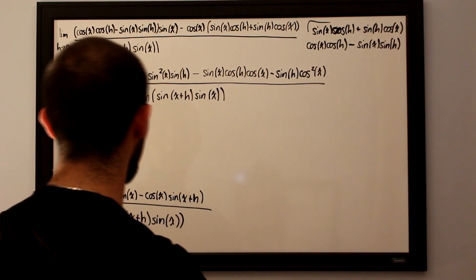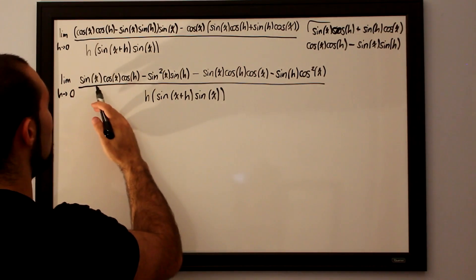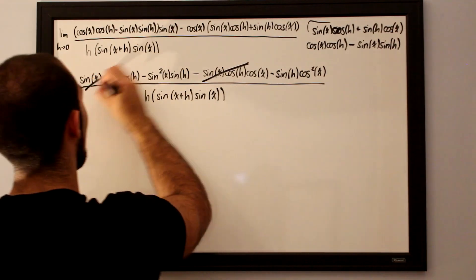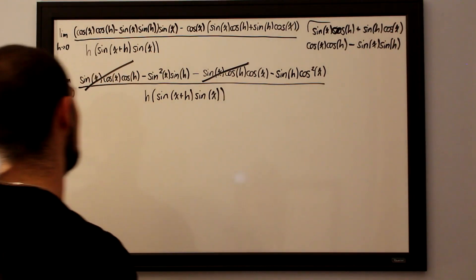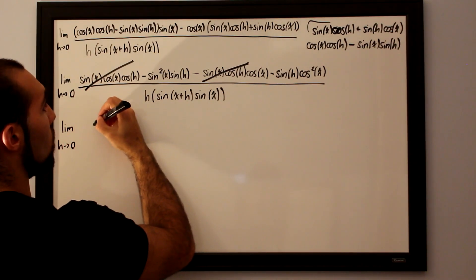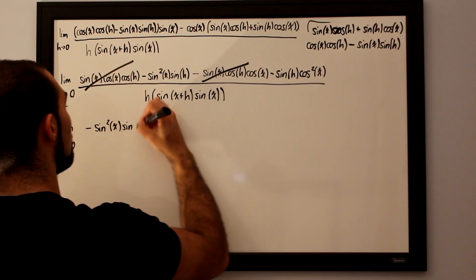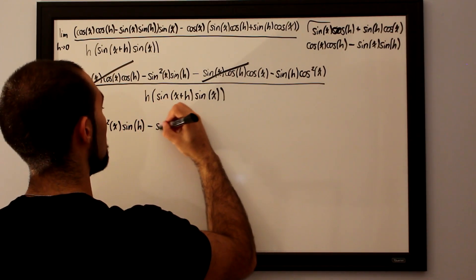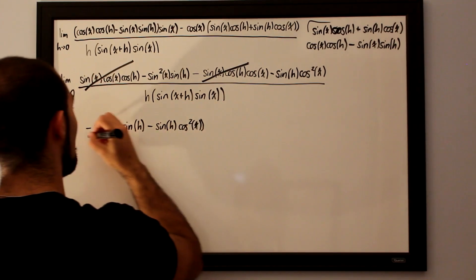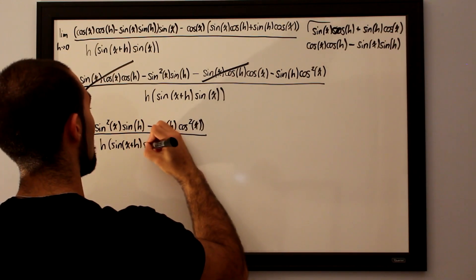Here we can spot a couple of common factors that cancel immediately. We have sine of x times cosine of x times cosine of h minus sine of x times cosine of x times cosine of h — these two cancel each other out completely. So we are left with the limit as h approaches 0 for negative sine squared of x times sine of h minus sine of h times cosine squared of x, all divided by h times sine of x plus h times sine of x.